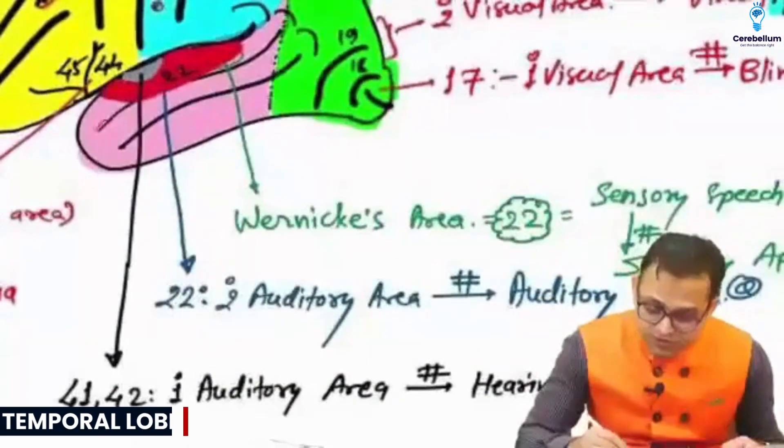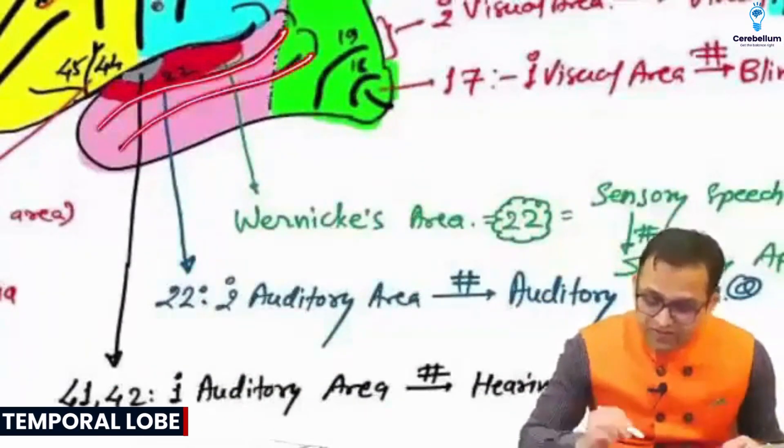Come to the temporal lobe. In the temporal lobe, you will see the superior and inferior temporal sulcus.